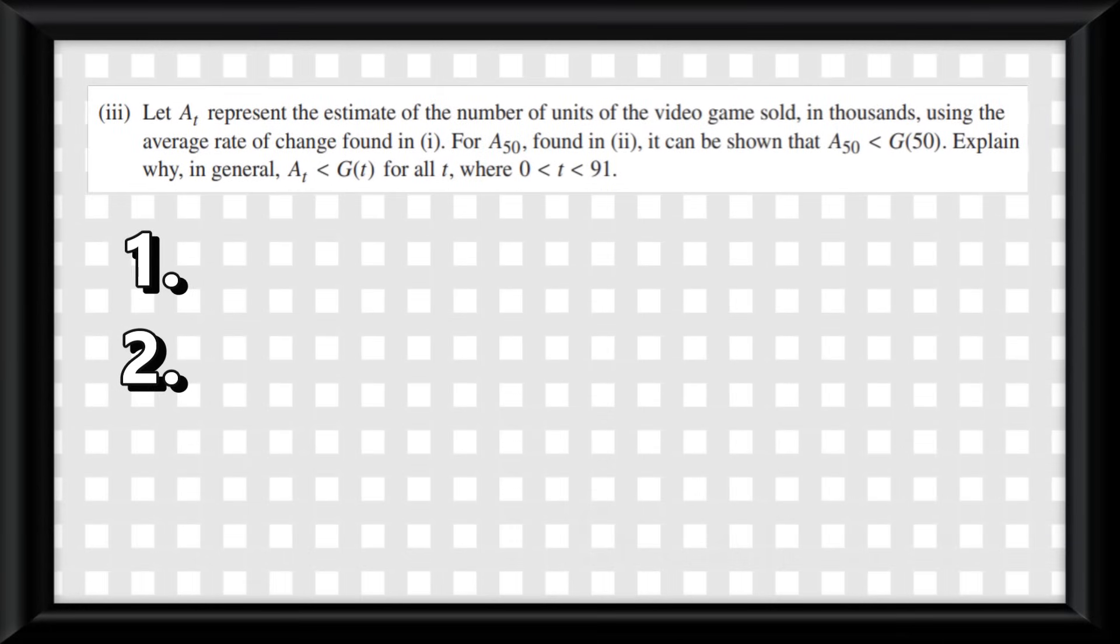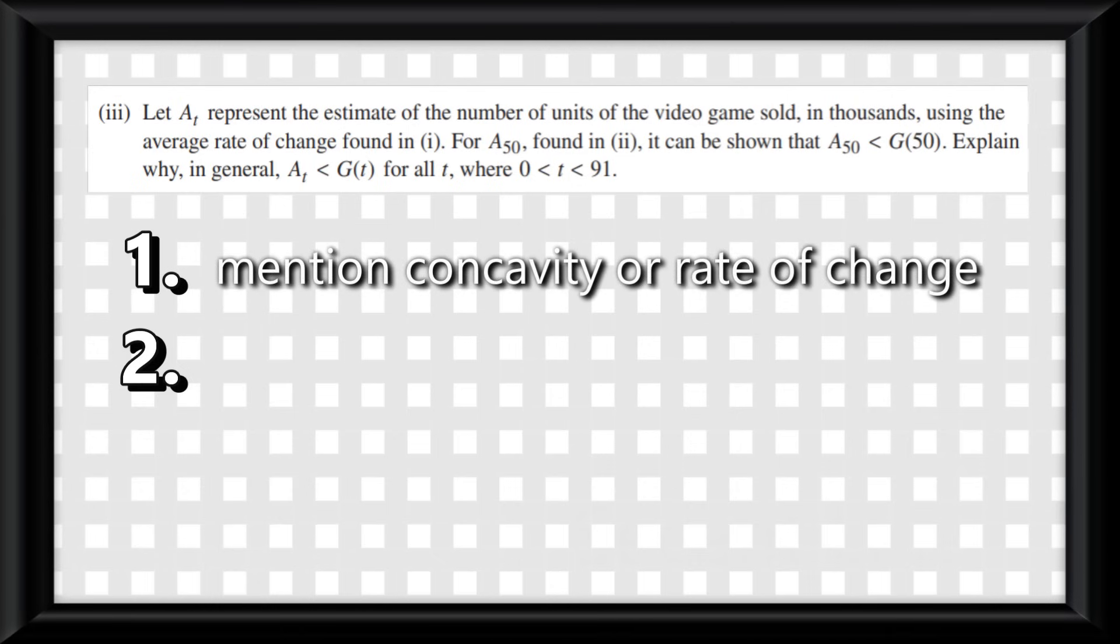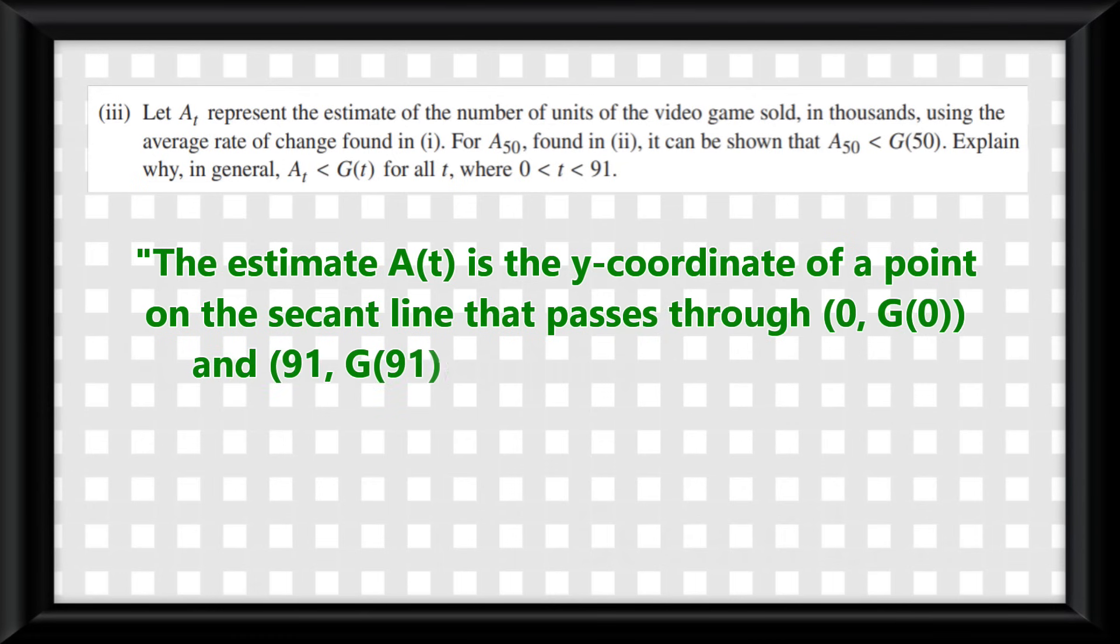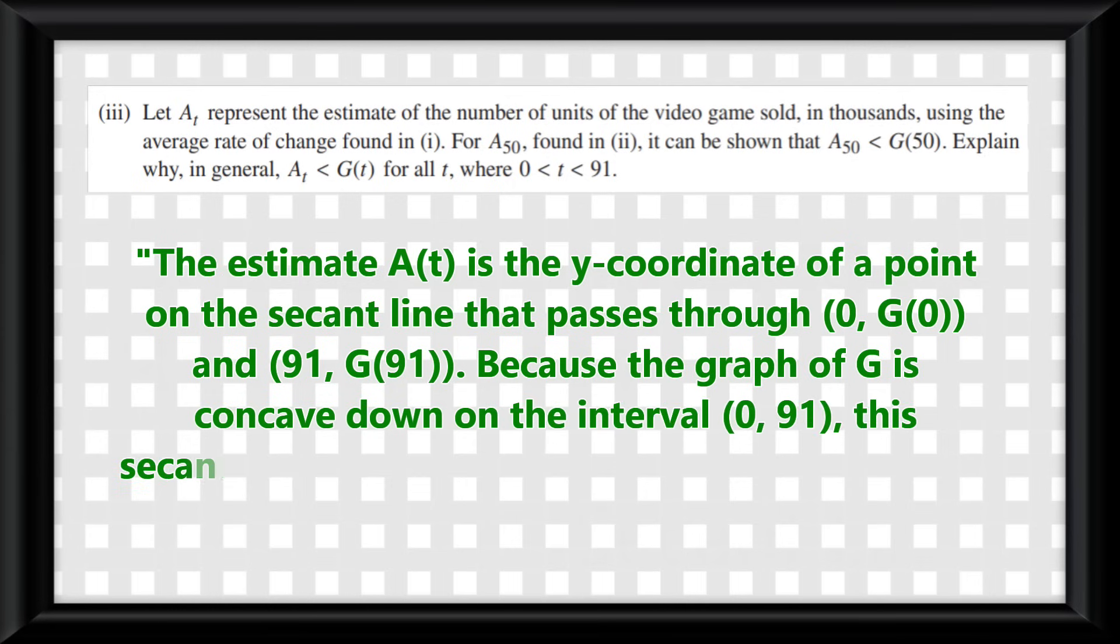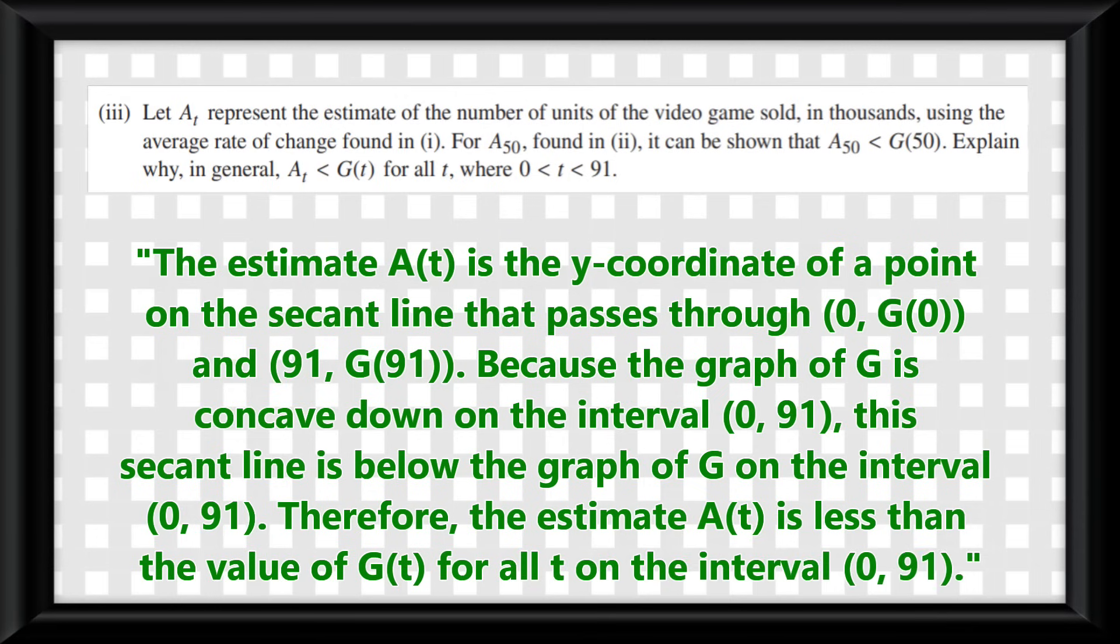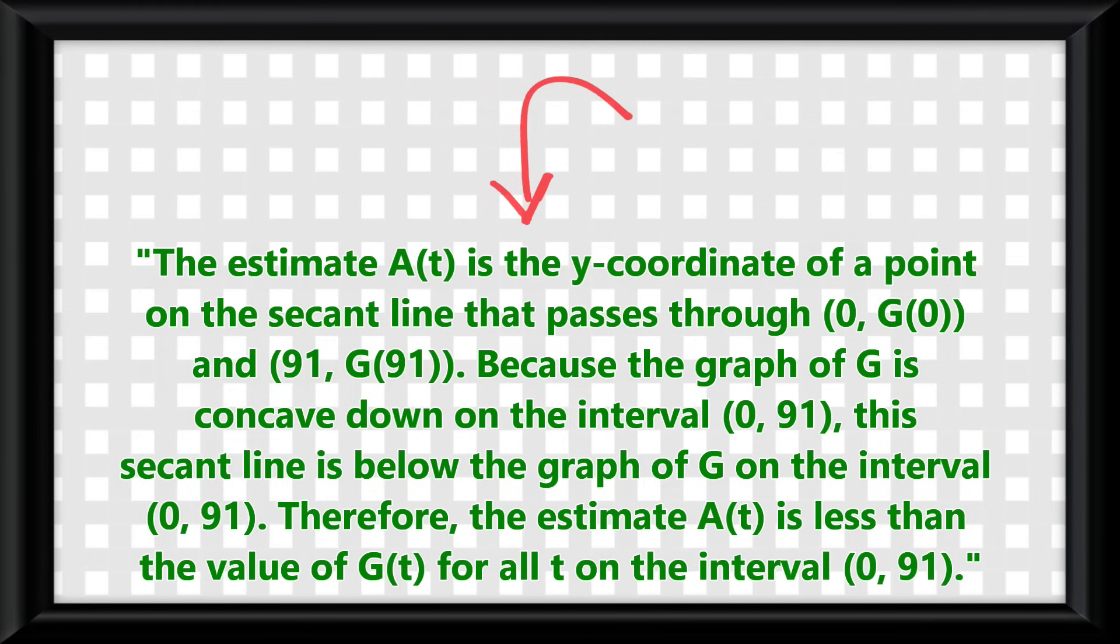So going back to the problem, we need to include two things to get full points. First, we need to say that the graph of g is concave down, or that its rate of change is decreasing. And second, we need to say that the average rate of change is modeled by a secant line. So we can say something like, the estimate a_t is the y-coordinate of a point on the secant line that passes through (0, g(0)) and (91, g(91)). Because the graph of g is concave down on the interval 0 to 91, this secant line is below the graph of g on the interval 0 to 91. Therefore, the estimate a_t is less than the value of g(t) for all t in the interval 0 to 91. This will give us full points.